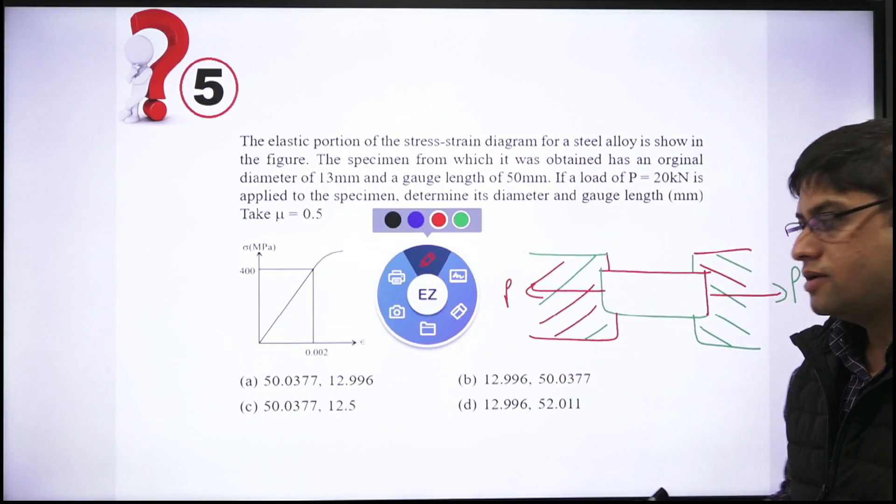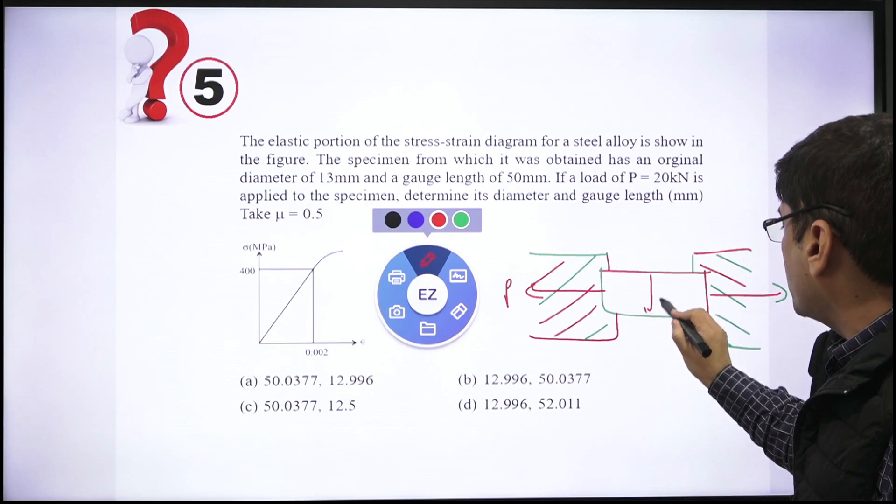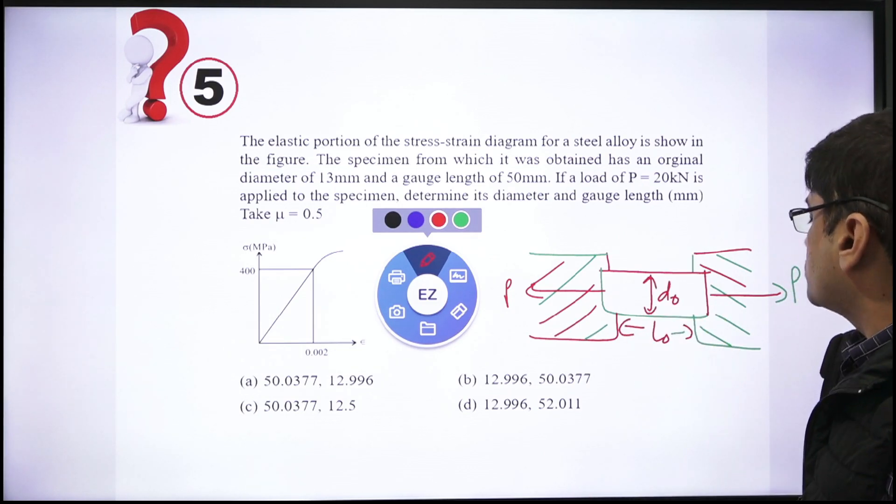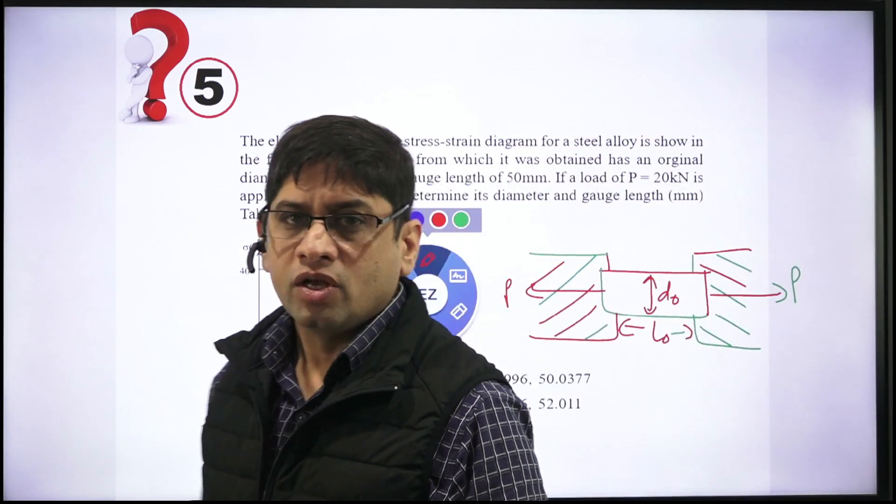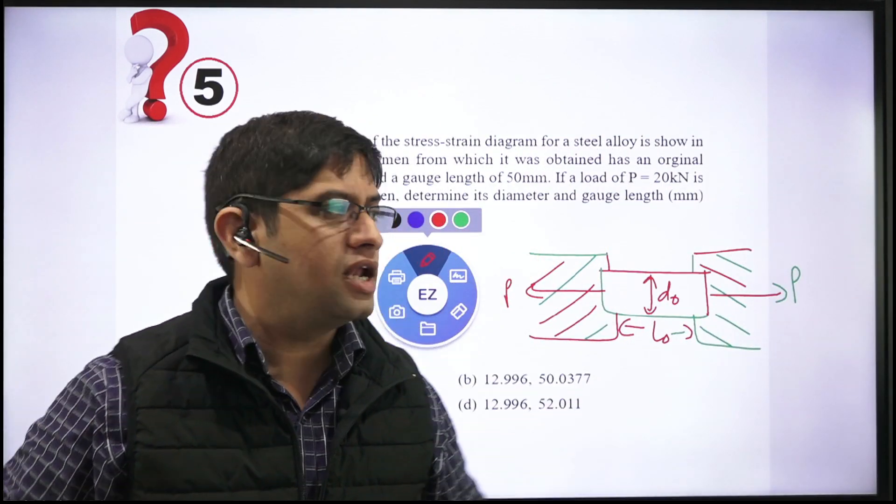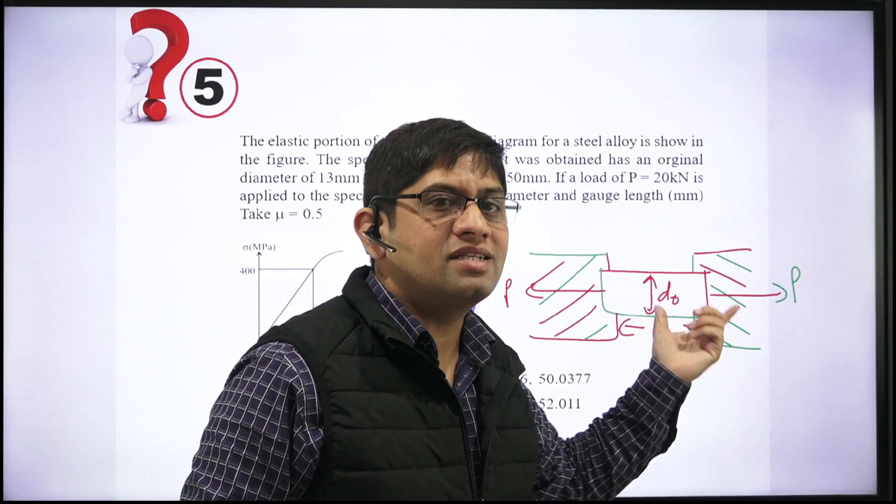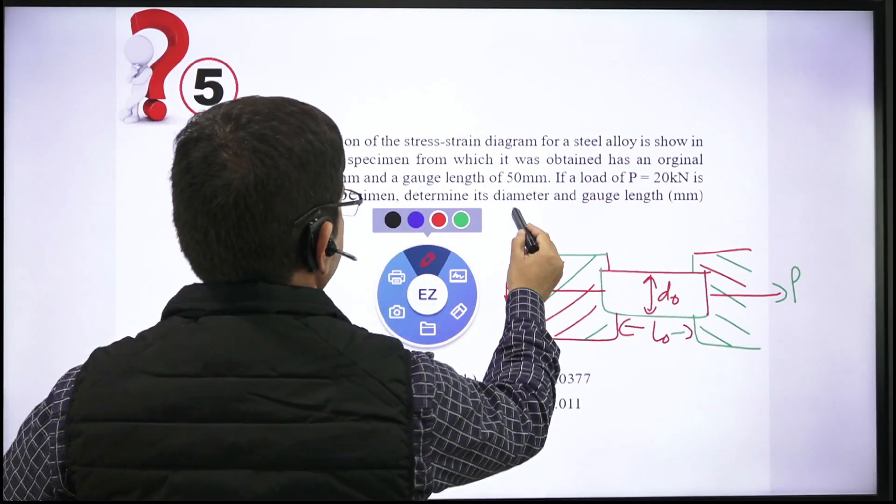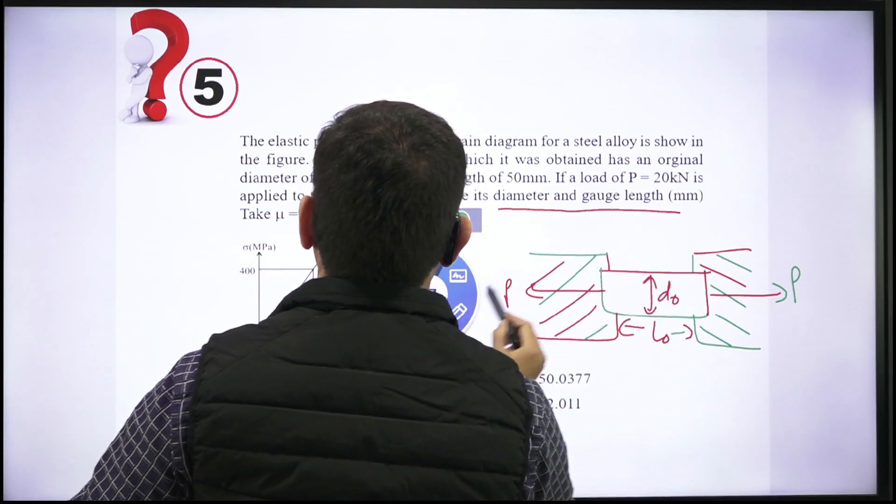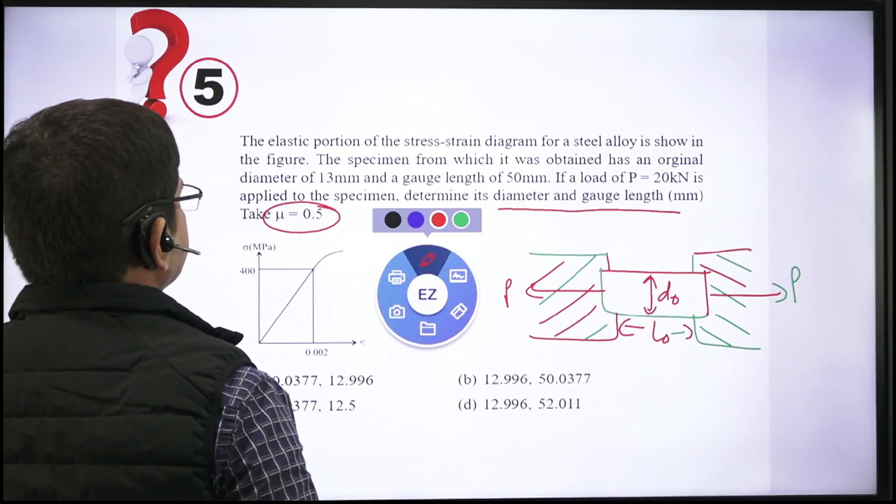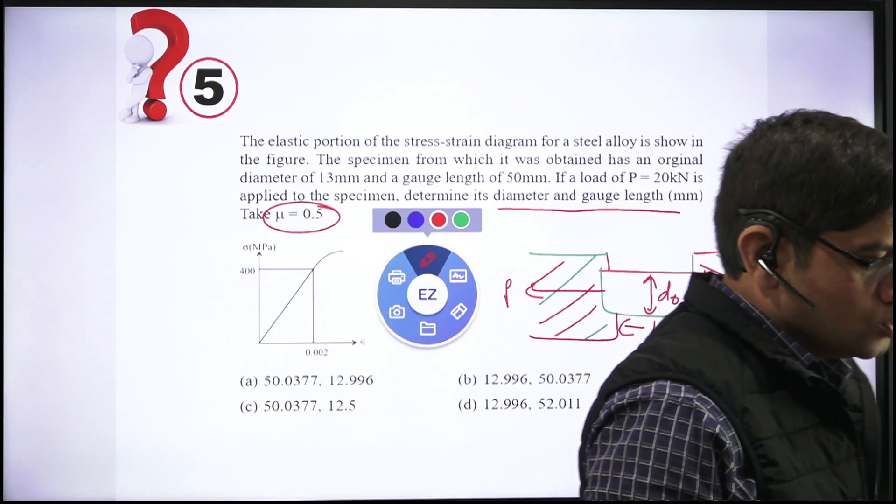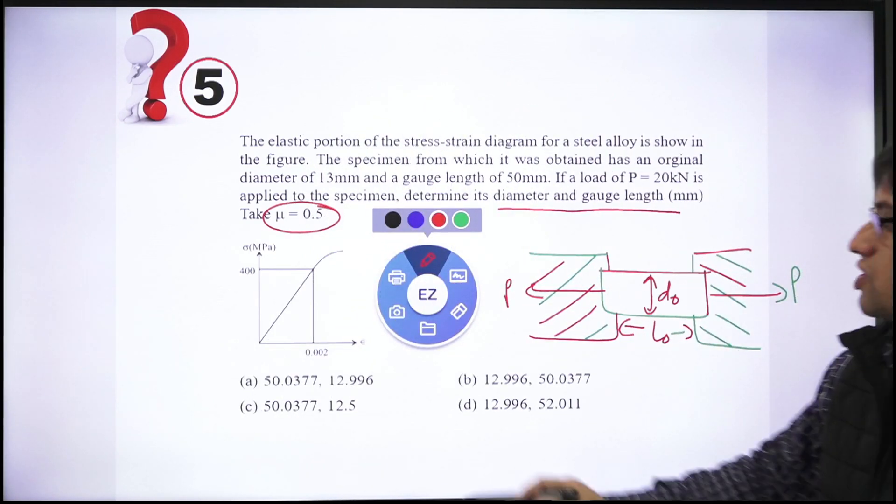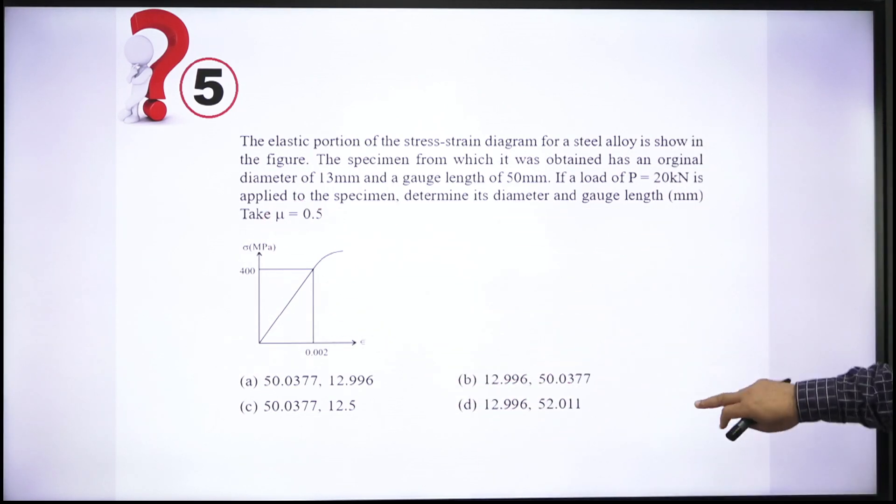This bar has original diameter d naught, original length l naught. This l naught is called gauge length. The moment you subject it to tensile loading, its length or diameter changes. He is saying that you have to find out what is the final diameter and length. Poisson's ratio is 0.5 given to you. Load is given to you, Poisson's ratio is given to you, and stress-strain diagram in the elastic limit is given to you.